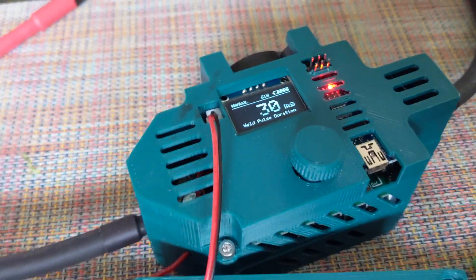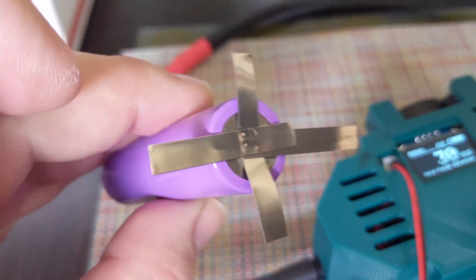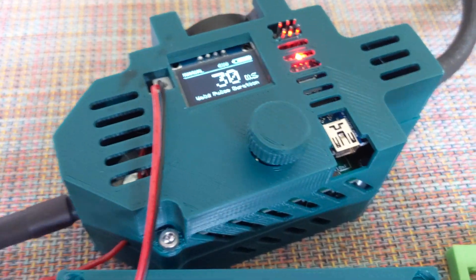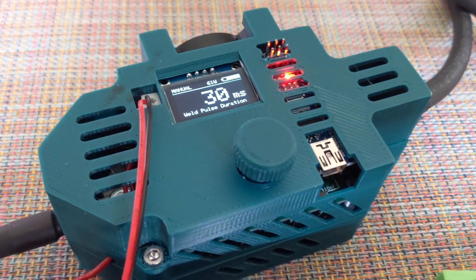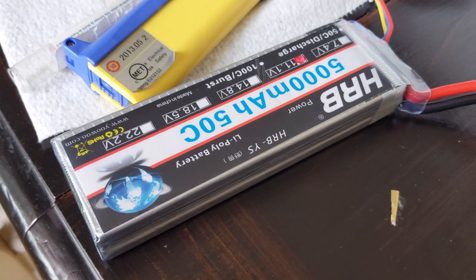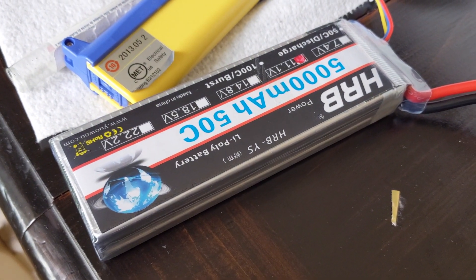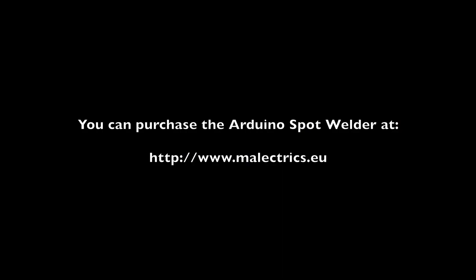So there you go. That's a 30 millisecond pulse on the Arduino welder through three nickel strips. Hopefully that's enough to tell you about the power of this. The setup is a 5,000 milliamp hour 50C cell and the welder.